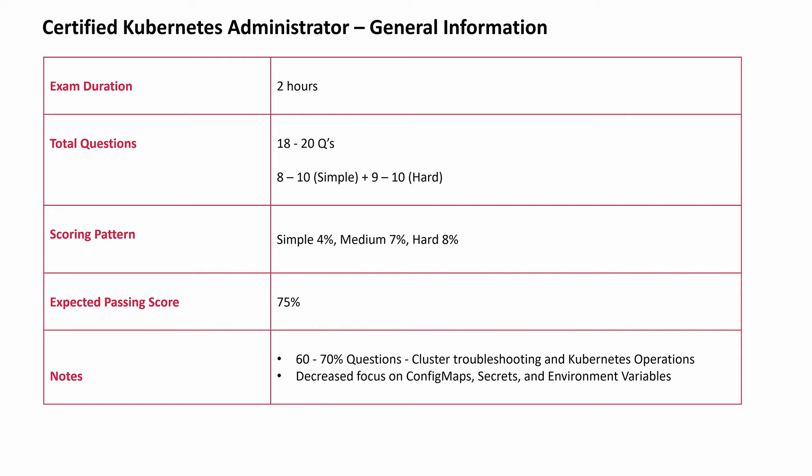The previous exam was 3 hours; now it is 2 hours. Total questions will be between 18 to 20. You can expect a maximum of 10 simple questions and 9 to 10 hard questions, so you have to get 100% on simple questions to improve your passing chances. There are only three scoring patterns: simple questions get 4%, medium 7%, hard questions get 8%. The expected passing score is 75%, though we don't know that yet as it's in beta. 60 to 70% of questions come from cluster troubleshooting and Kubernetes operations, so you have to practice thoroughly.